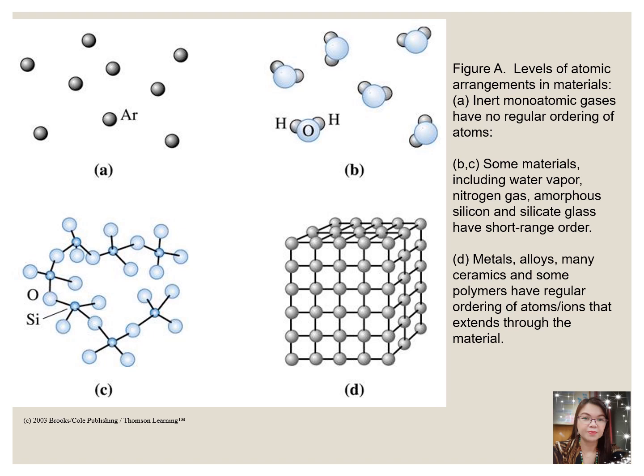This figure tells us the level of atomic arrangement in materials. For letter A, it's the inert monoatomic gases that have no regular ordering of atoms. B and C, some materials including water vapor, nitrogen gas, amorphous silicon, and silicate glass, have short-range order. And for letter D, metal alloys, many ceramics, and some polymers have regular ordering of atoms or ions that extends through the material.